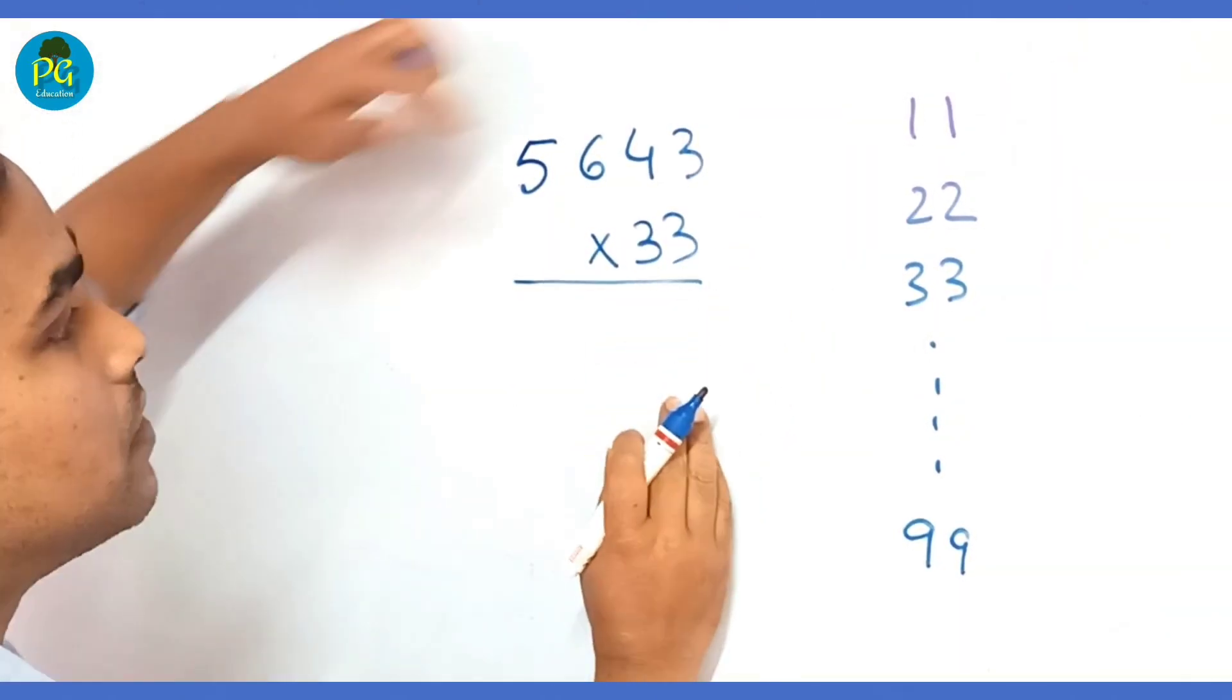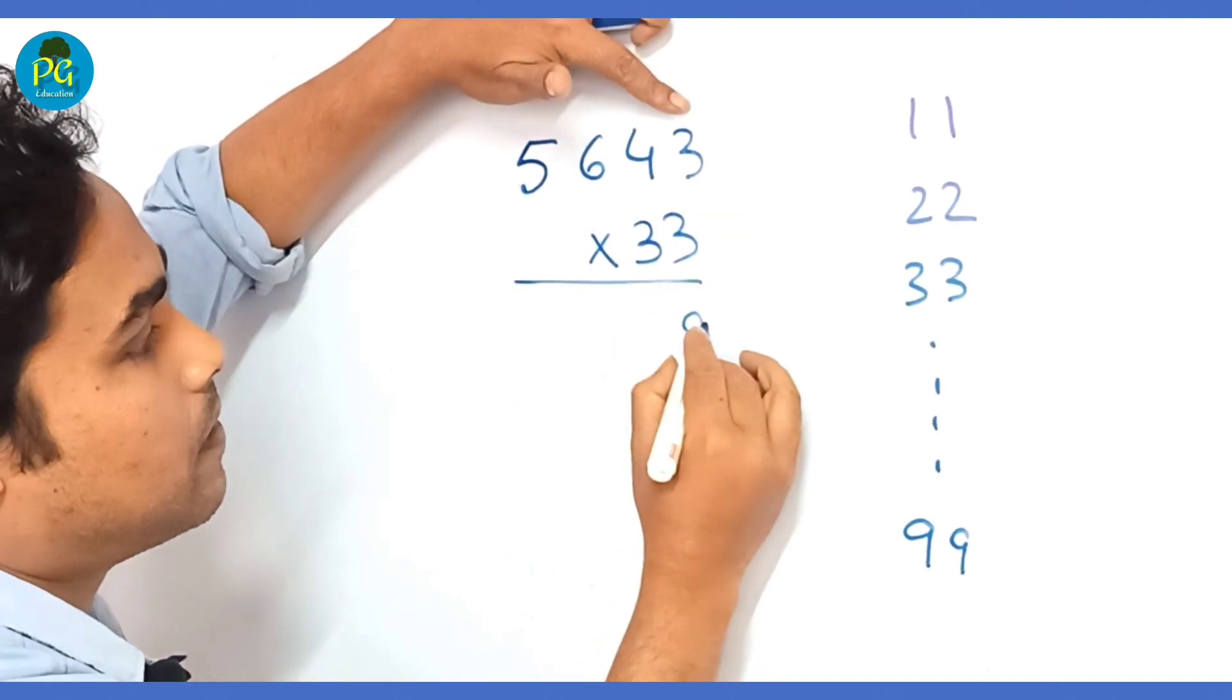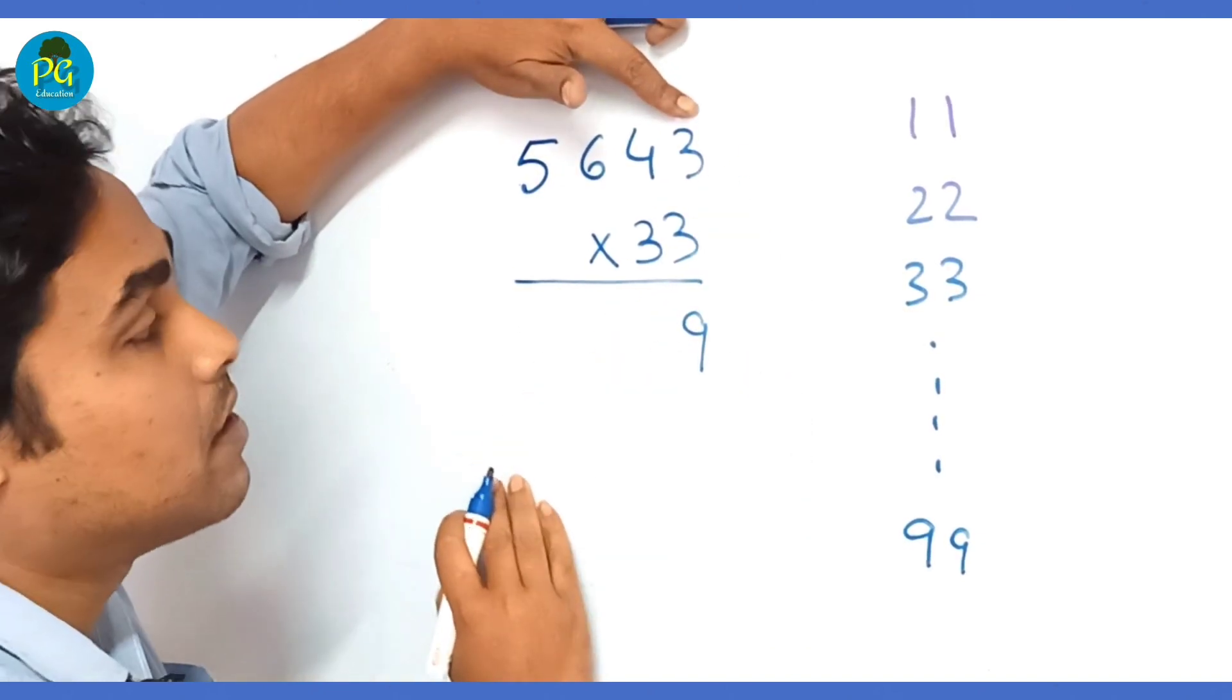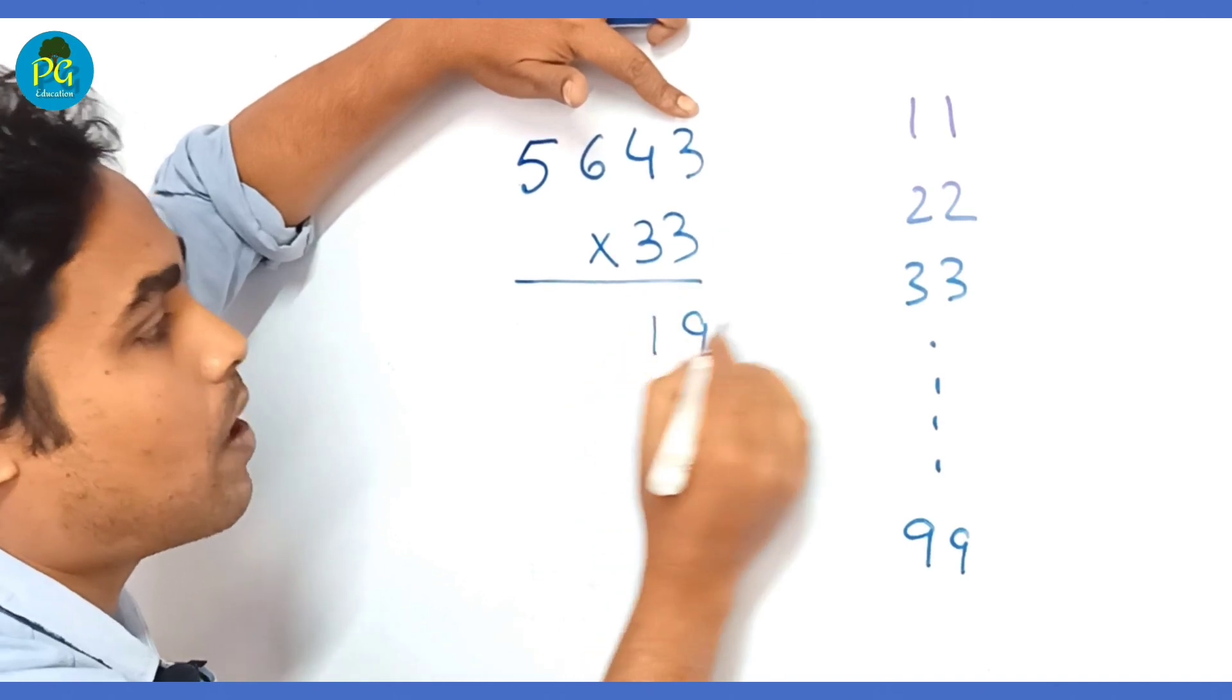Then 6 plus 4 is 10, 10 into 3 is 30 plus 2 is 32, 3 in hand.